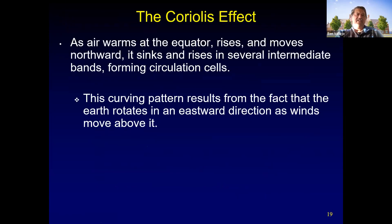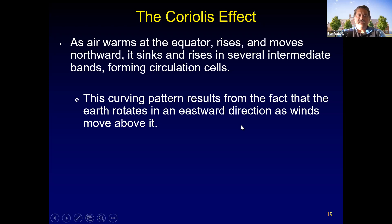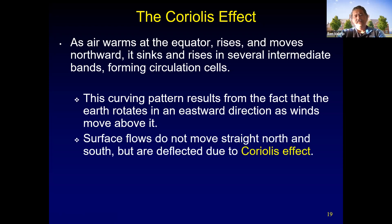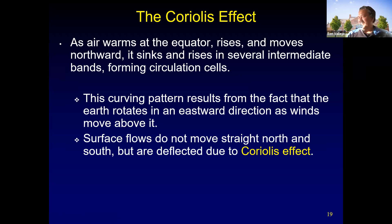The Coriolis effect explains that as air moves north or south away from the equator, it doesn't move straight north or south — you have to account for Earth's rotation. The result is a curved pattern; the earth rotates eastward as winds move around it. It was once said that if you flush a toilet in Australia it goes counterclockwise, but later studies showed the shape of the toilet and other factors were more influential. That's the Coriolis effect.